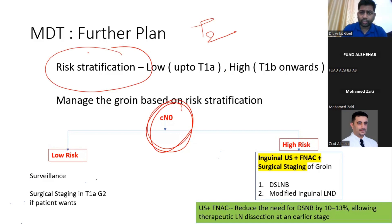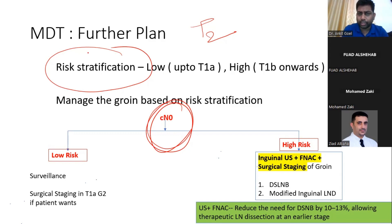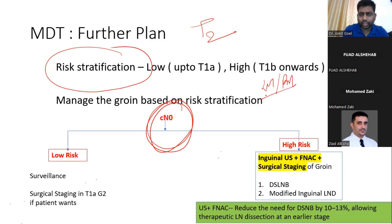A low risk penile cancer is any primary tumor that comes out as T1a or below. If it is T1b or beyond, it is high risk. T1b means subepithelial connective tissue with lymphovascular invasion or perineural invasion. If T1b, T2, T3, or T4 is present, it is high risk — high risk for groin metastases and high risk for pelvic lymph node metastases.